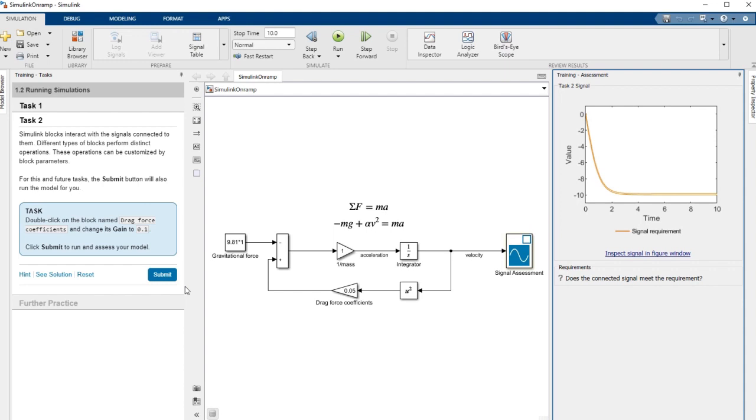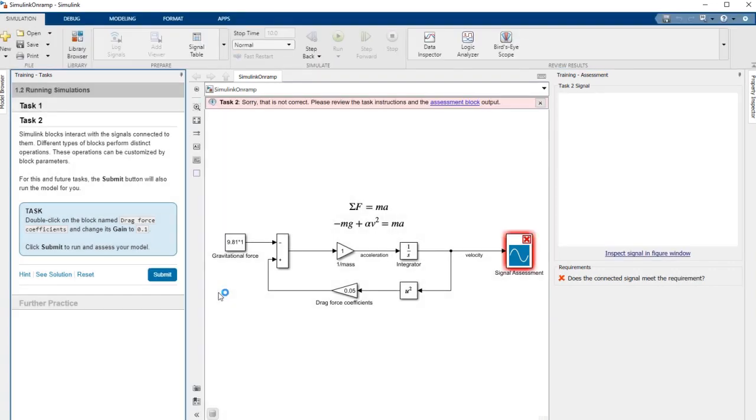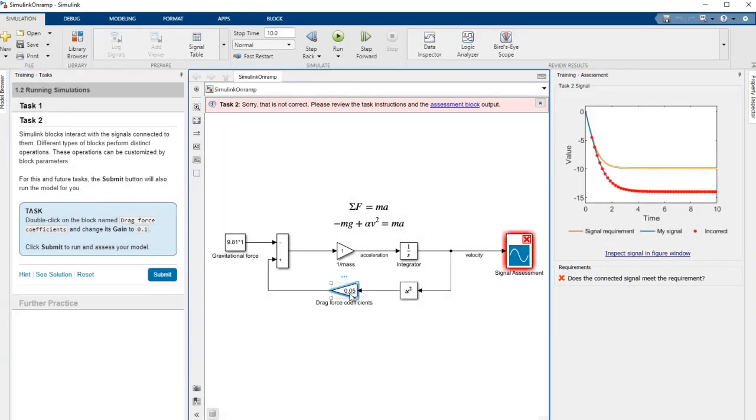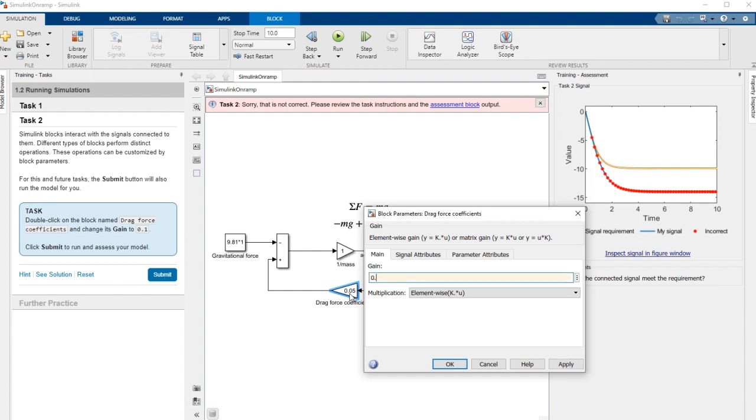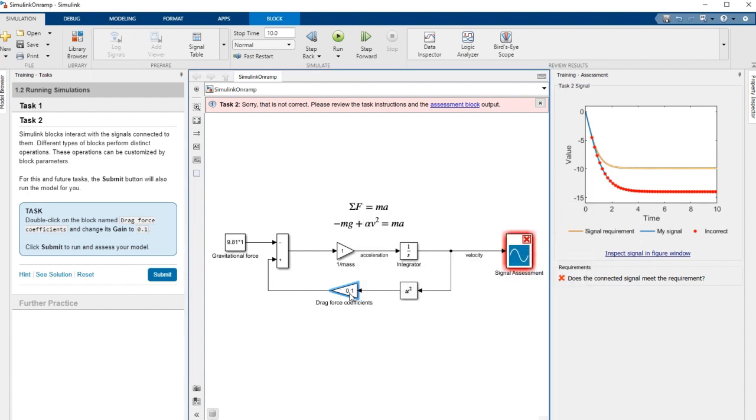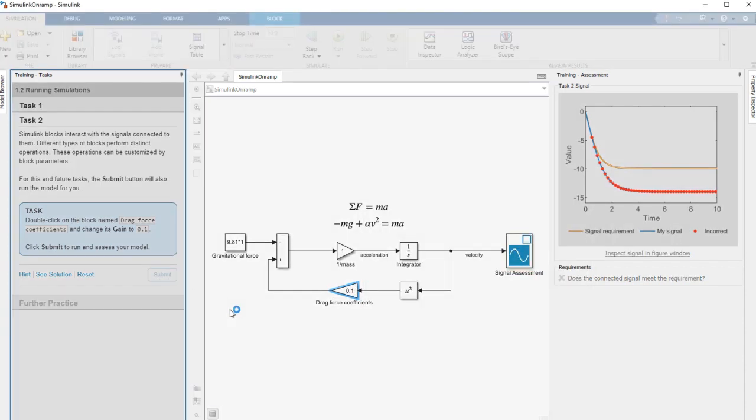Simscape OnRamp works in a web browser or the latest release of MATLAB. Throughout the course, you'll receive step-by-step instructions and instant feedback. You can also experiment and try things out on your own.